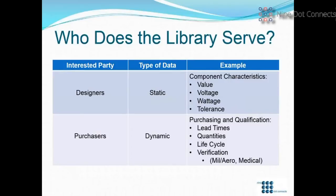Who does the library serve? It may sound like a silly question, but the problem is that we've always focused libraries on the designer. The designer needs certain things, like characteristic data, and it's very static. But there are also the purchasers, who play a major role as well. The designers like static data — characteristic data that will be the same whether it's tomorrow, next week, or ten years from now.